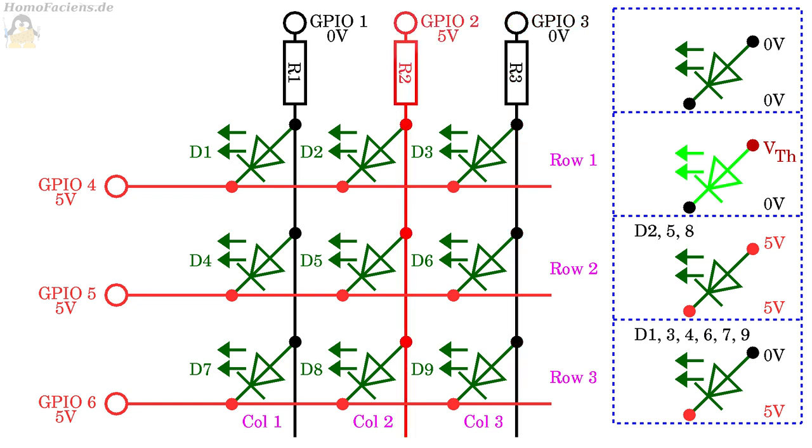Let's set GPIO number 2 to high, GPIO 1 and 3 to low. The LEDs in columns 1 and 3 are still switched with reverse polarity having 5V at the cathodes and 0V at the anodes. The diodes in column 2 have 5V on both the cathodes and the anodes, which means that no current can flow through any of the three LEDs.